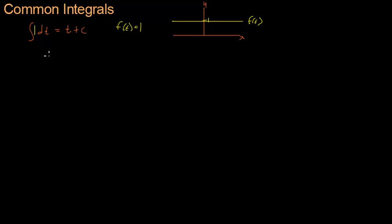Remembering that integrals are an accumulation of a rate function, f of t must be some kind of rate function. What is it a rate of? Let's take the geometric interpretation and say that f of t is the rate under which the area underneath the yellow curve is increasing. If I draw a line here at the current time t, then the area between the y-axis and this green line, underneath the yellow curve and over the x-axis, is going to be accumulated by our integral.